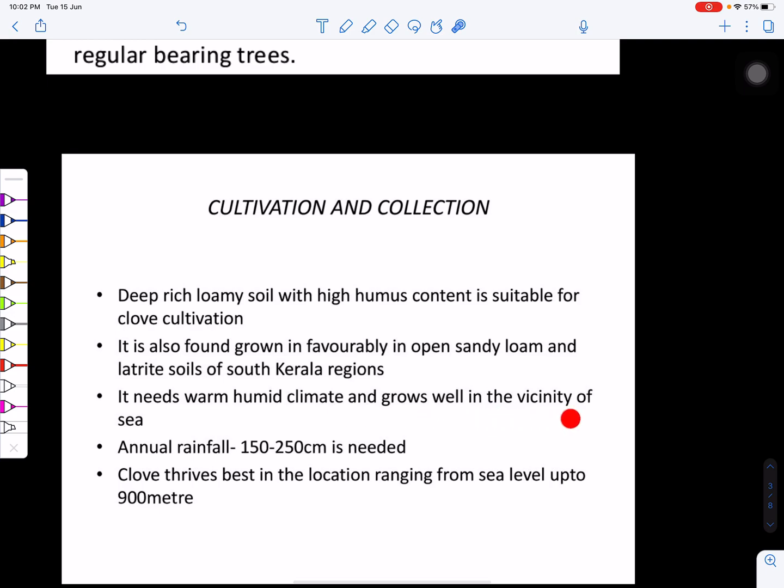Annual rainfall requirement is 150 to 250 centimeters and cloves thrive best in the locations ranging from sea level up to 900 meters.